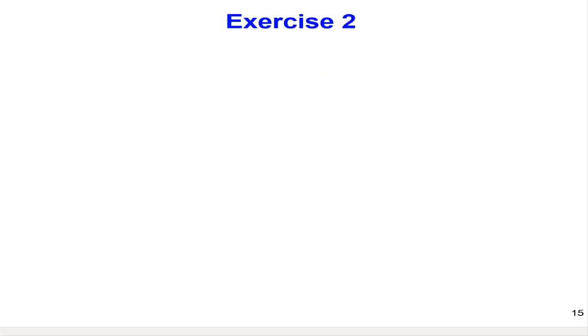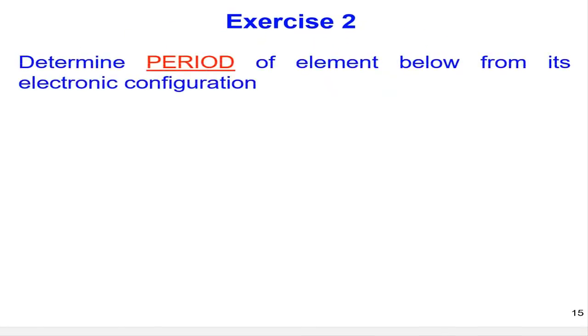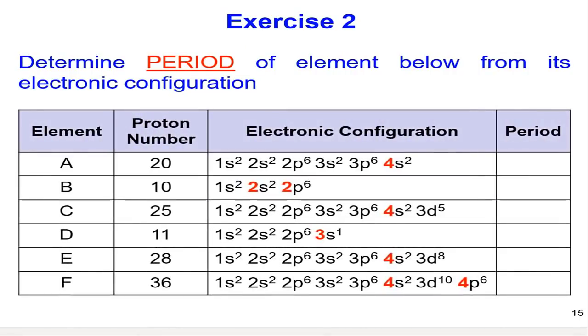Time for another exercise. Exercise 2. Determine period of element below from its electronic configuration. Remember just now, we conclude that the period of elements are indicated by the highest N value in the electronic configuration.